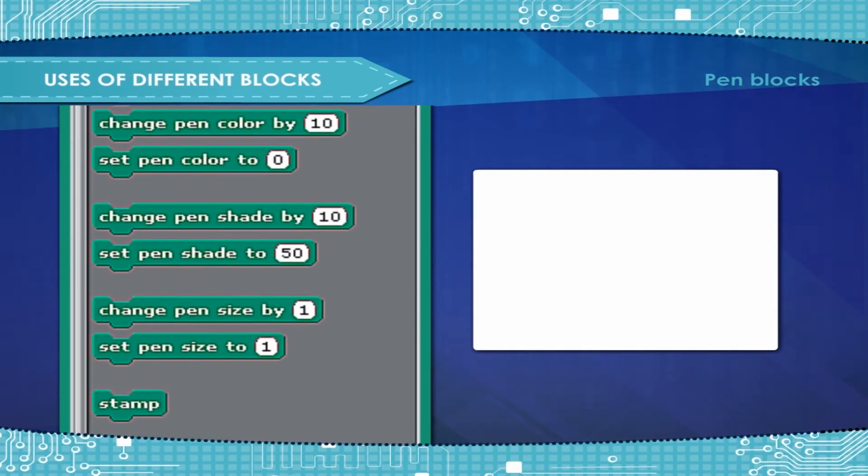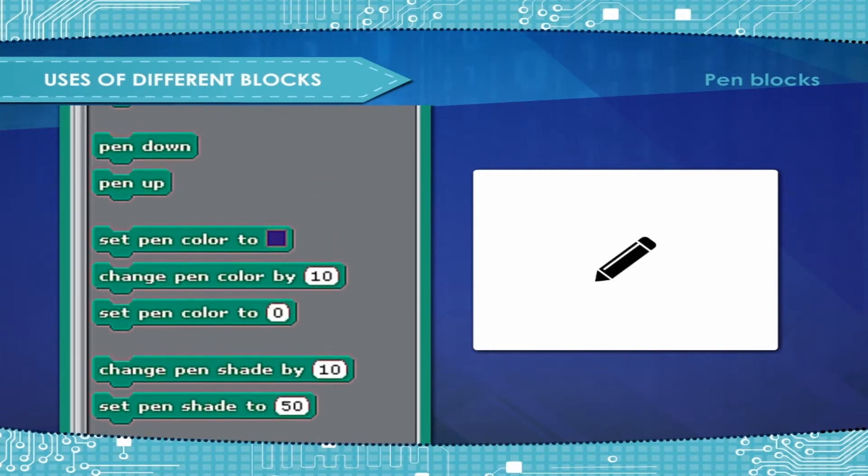Stamp pens the sprite's image on the screen and can be removed using clear. Pen down puts the sprite's pen down. Pen up puts the sprite's pen up.